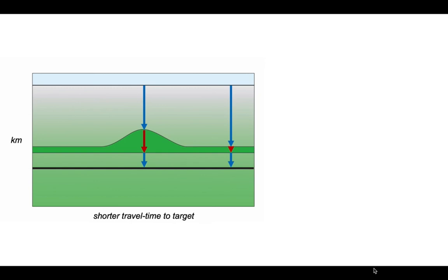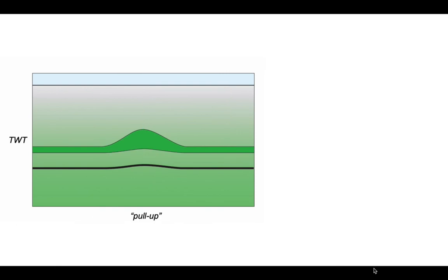Therefore, if we plot this diagram not in kilometres but in two-way time, there's a feature where the target horizon and the base of the high velocity layer plot higher than they do to the sides. This creates an artefact known as pull-up. We also get distortions and multiples that dim the image beneath the thicker part of our high velocity material.